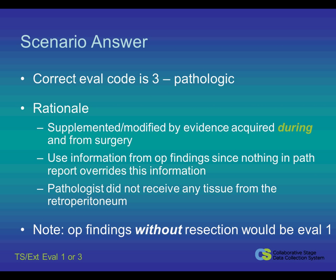The answer to this scenario is eval code 3. This is because there was evidence during the surgery to prove the information and the highest stage. "During the surgery" refers to the surgeon's operative findings. Code 3 states the evaluation is based on evidence acquired before treatment, supplemented or modified by additional evidence acquired during and from the surgery, particularly from the pathologic exam of the resected specimen. But nothing in the pathology report overrode the operative report, since the pathologist did not receive any tissue from the retroperitoneum. As a reminder, if there had not been a surgical resection, the evaluation code for the operative findings would be 1, the clinical classification, since that is used for operative findings when you don't have a biopsy or surgical resection.